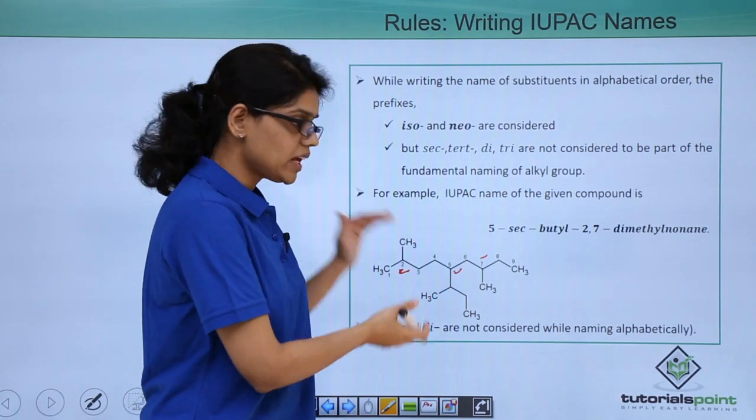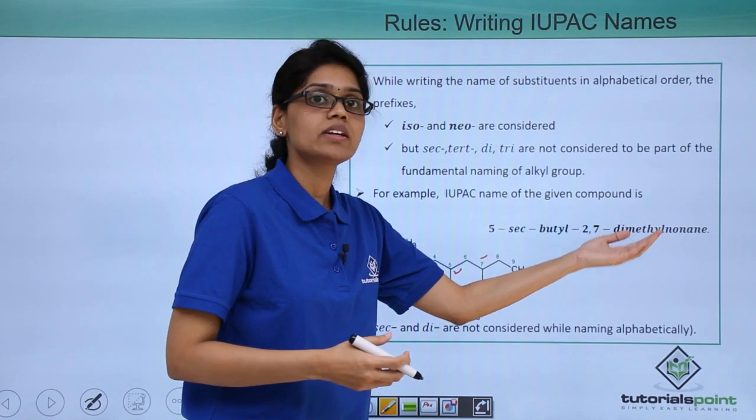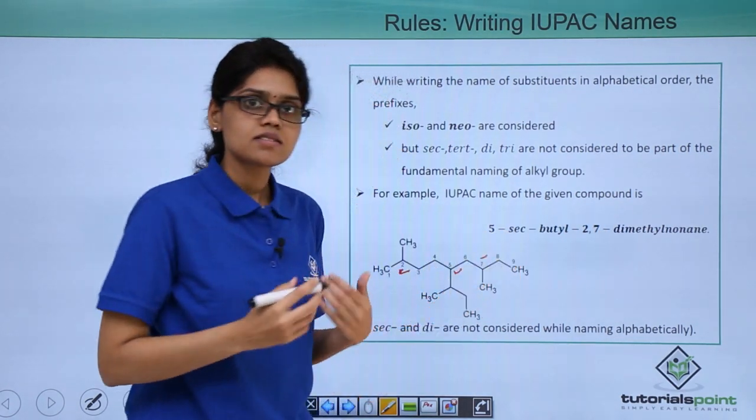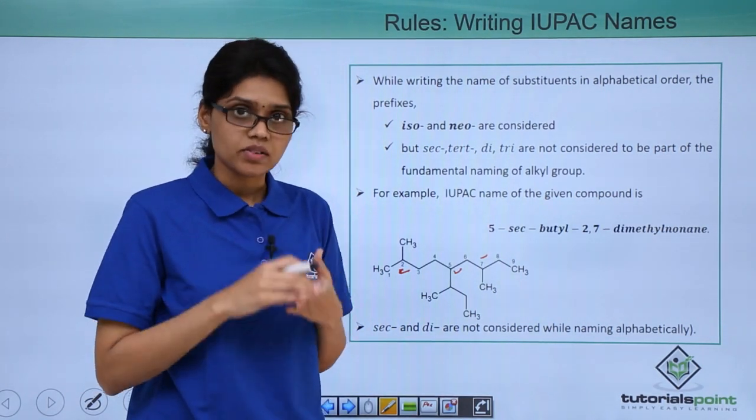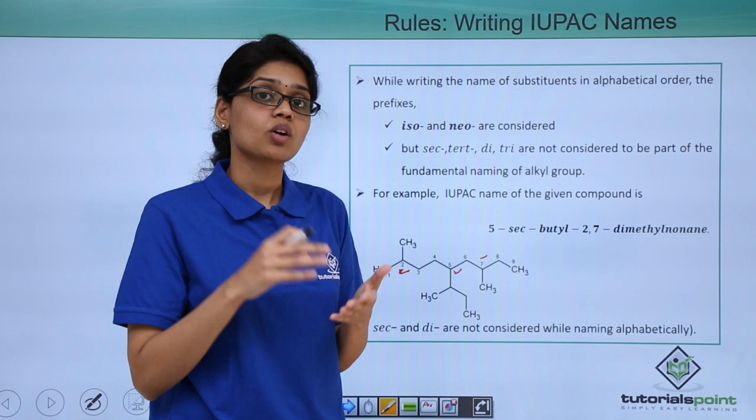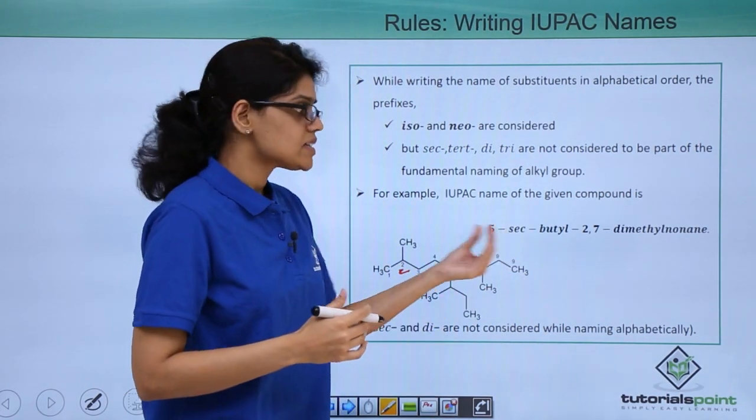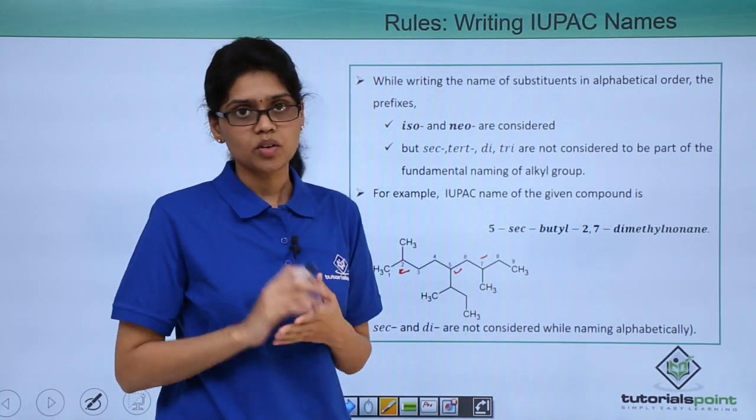If you try to name this particular compound, you can see that the name of this compound would be 5-sec-butyl-2,7-dimethylnonane. Because sec will not be essentially considered in the fundamental naming of IUPAC nomenclature. However, if it was an isopropyl or isobutyl group that would be considered alphabetically. But in this case sec will not be considered in alphabetical naming of organic compounds.